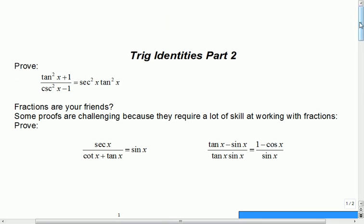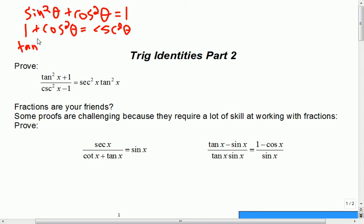Some of the ones that we're going to be using today other than the basic ones are ones like sine squared plus cosine squared equals 1, 1 plus cotangent squared equals cosecant squared, and tangent squared theta plus 1 equals secant squared theta. Those are some of the identities we brought up at the end of last lesson.